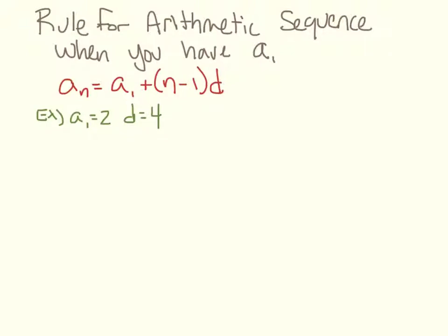Okay, so the rule for the arithmetic sequence when you have a₁ is aₙ equals a₁ plus (n-1) times d. So this is whenever you're trying to find an expression for the nth term in the sequence. So here I have, I'm given a₁ and I'm given d.